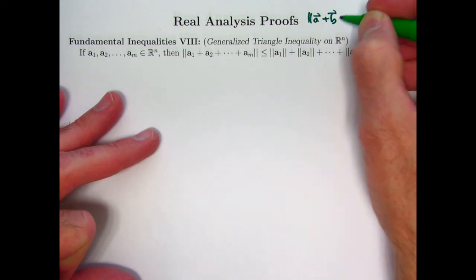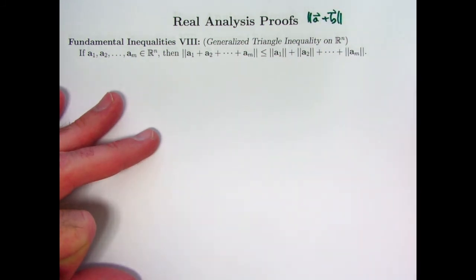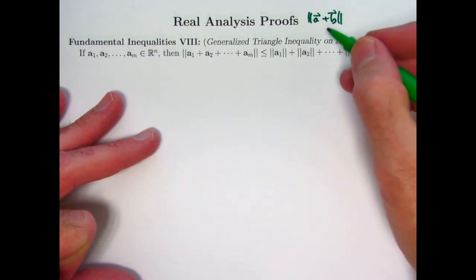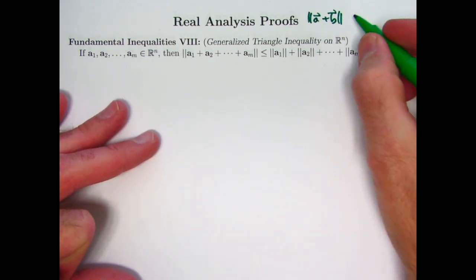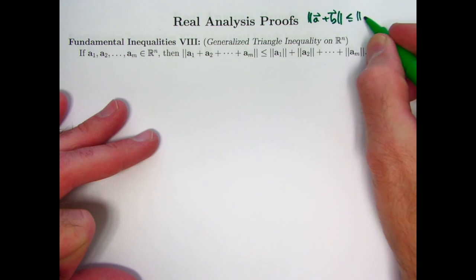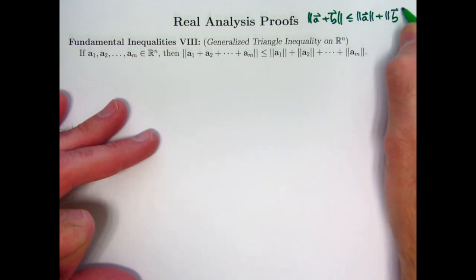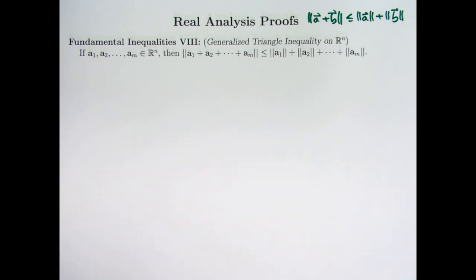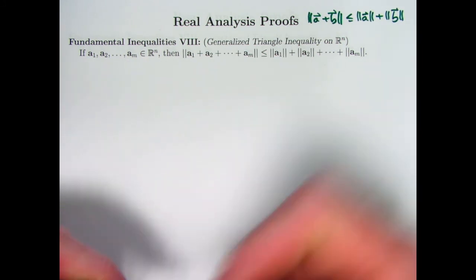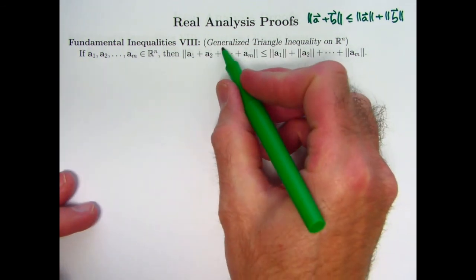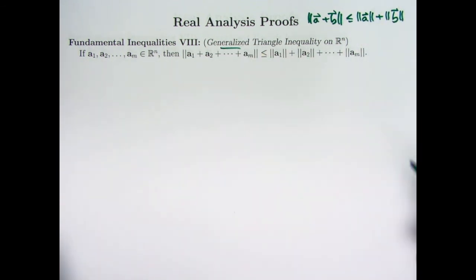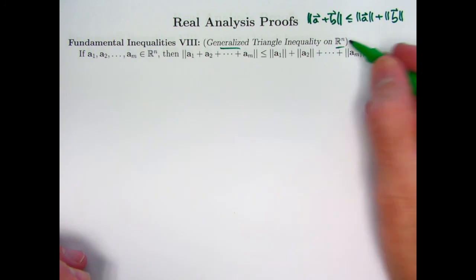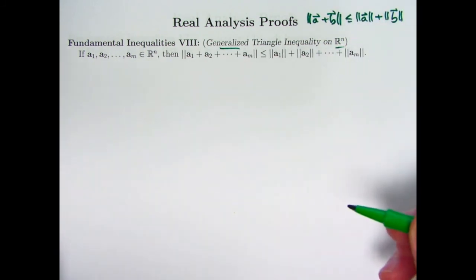If a and b are vectors, then the magnitude or length or norm, all three words are okay, of the sum a plus b is less than or equal to the magnitude of a plus the magnitude of b. There was a video in between where we talked about the Cauchy-Schwartz inequality, which we needed to help us prove this. This video is about the generalized version of this case in Rn. a and b were n-dimensional vectors here.